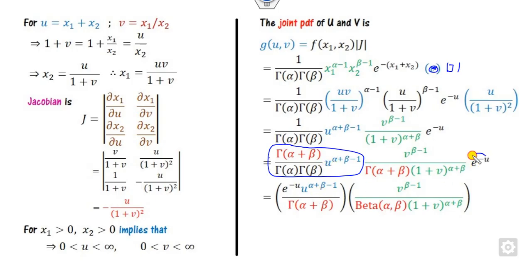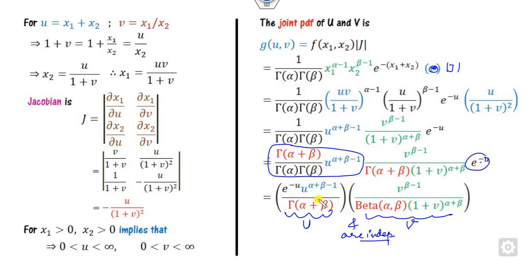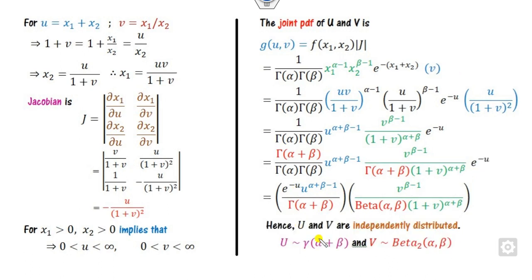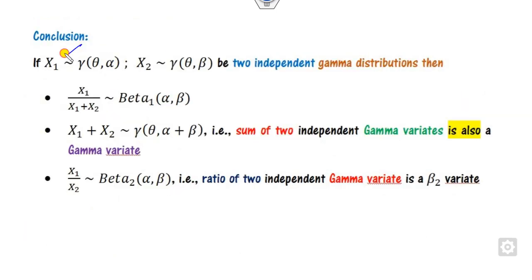Taking the u terms together and the v terms together, you can see that the part depending only on u is the gamma distribution, and the part depending only on v is the beta distribution of the second kind. Since the joint density factors, u and v are independent variables.